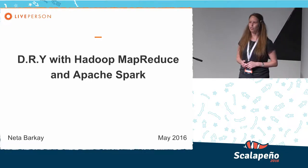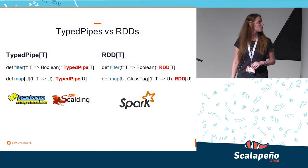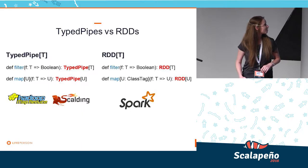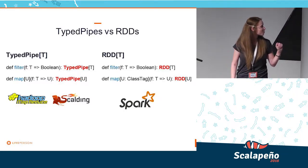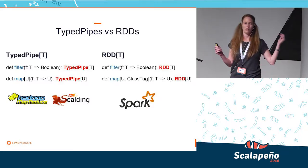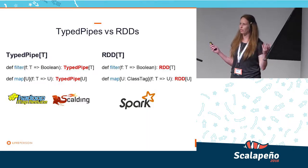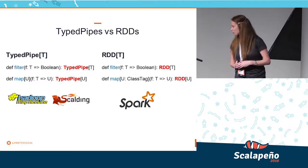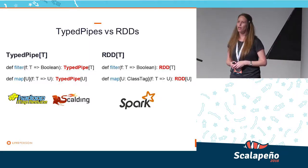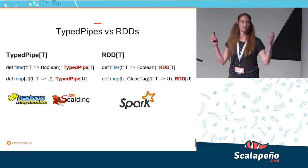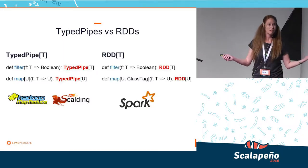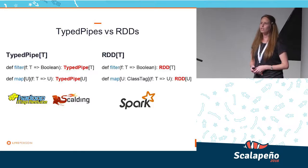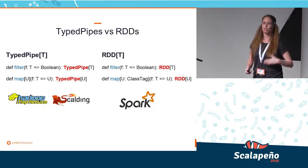So let's look at the functions that we have in Scalding and in Spark. We have TypedPipe in Scalding and we have RDD in Spark. The functions we have — for example, filter and map — if this slide was shown correctly, you could see that filter has the exact same signature, but map has a slightly different signature. But what we can see is that the functions in Spark and in MapReduce's TypedPipe are actually similar, and they're also similar to Scala collections. This suggests that maybe we can write the same data flow in one language and then run it on both these platforms.